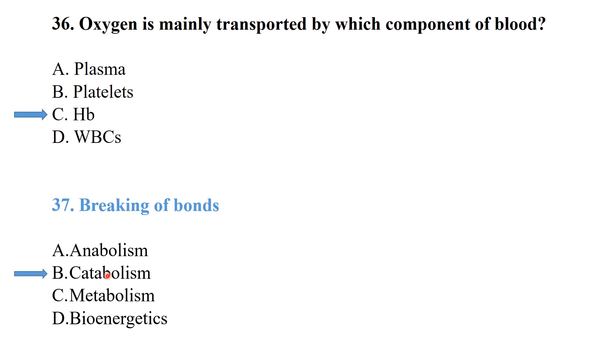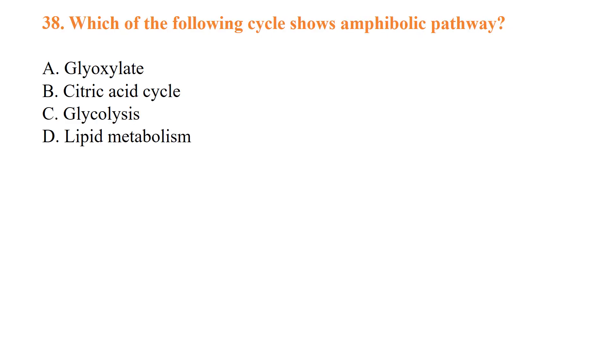Which of the following cycle shows amphibolic pathway? Amphibolic pathway is the pathway in which both catabolism and anabolism are involved. So amongst these options - glycolysis, citric acid cycle, glycolysis, or lipid metabolism - citric acid cycle is the best example of the amphibolic pathway.